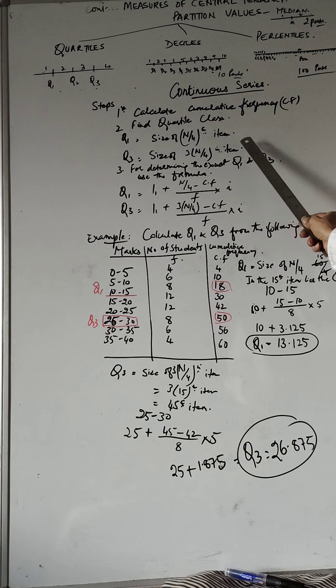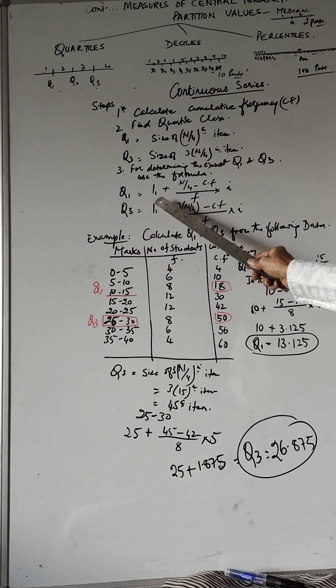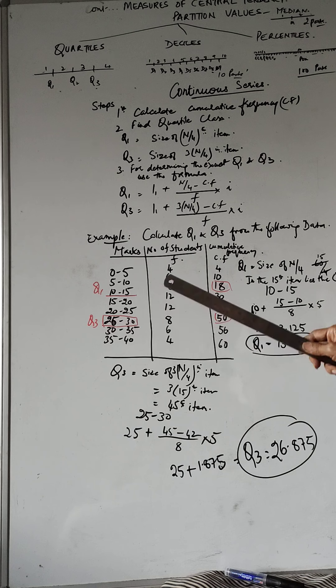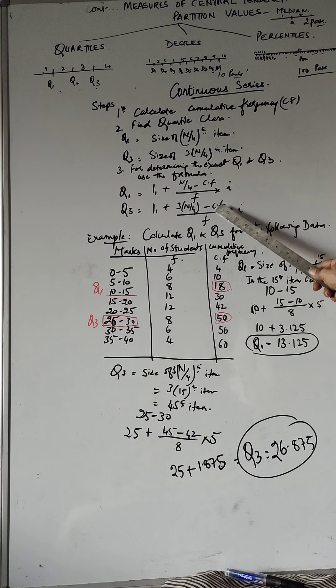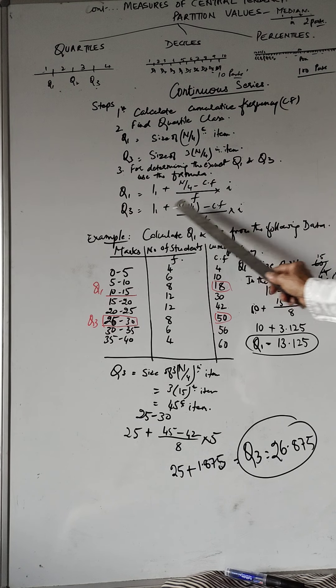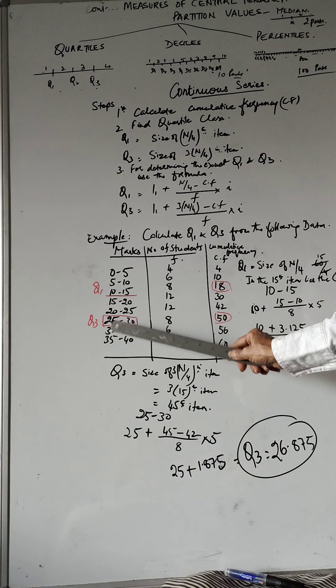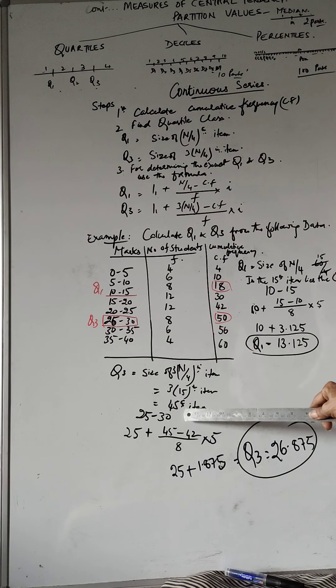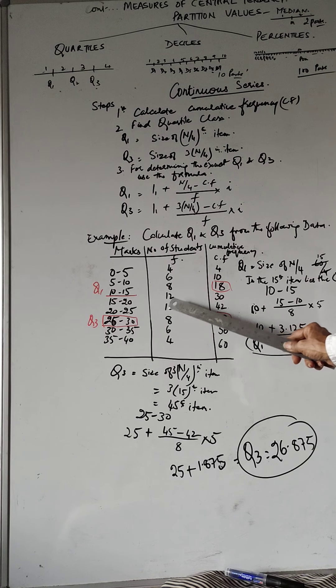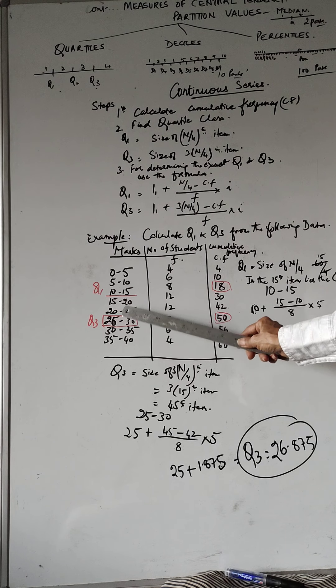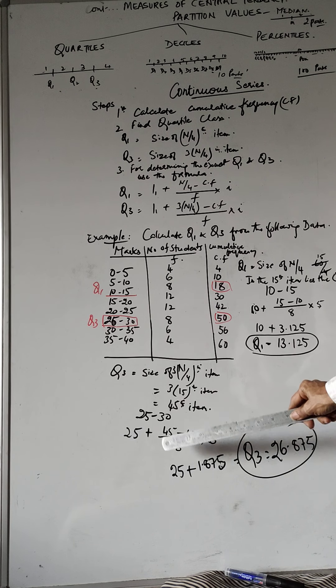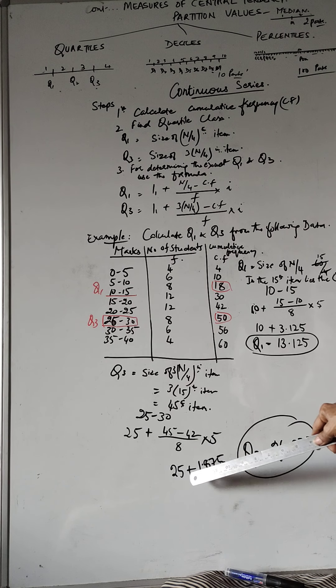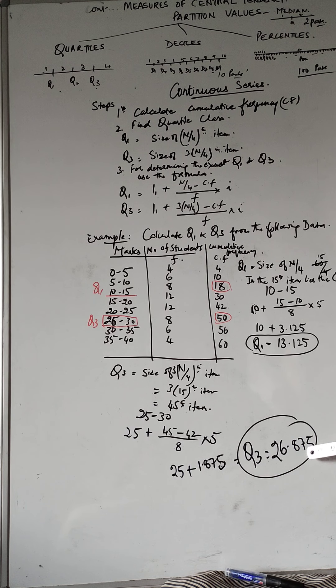So once we've discovered where the quartile 3 will lie, we use this: L1 plus 3n divided by 4th item minus Cf upon F into I. So instead of me writing this again, it's good if you write. We just put the values now. L1 will be 25 plus this we worked out as 45 minus the cumulative frequency coming before that is 42. And the frequency of the 3rd quartile is 8. So I've written 8 into the class interval is 5. So this is how when we do, we get 25 plus 1.875. So Q3 is 26.875.